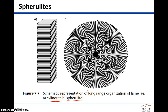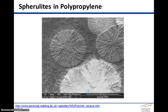A scanning electron micrograph showing spherulites in polypropylene reveals both large and small spherulites.